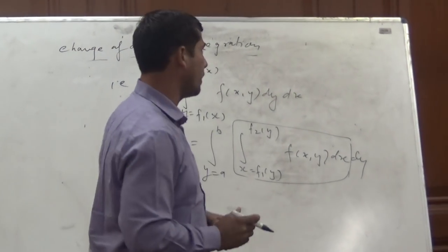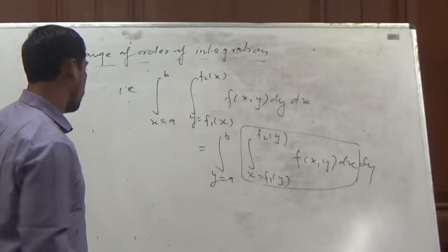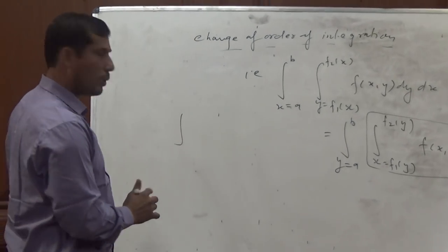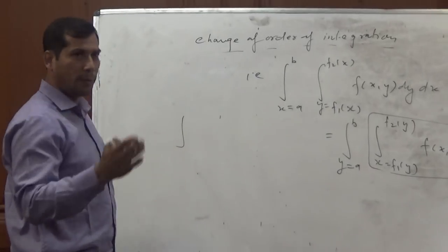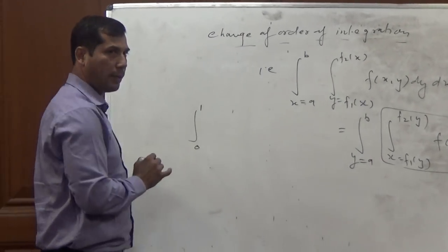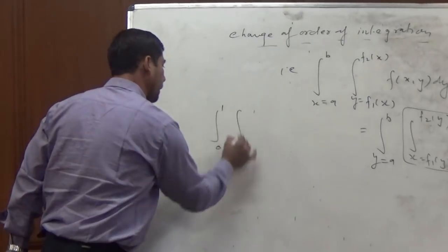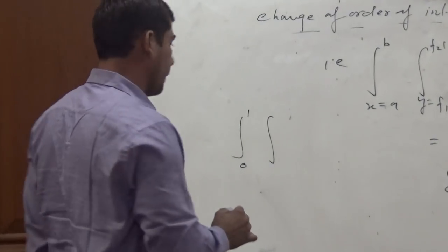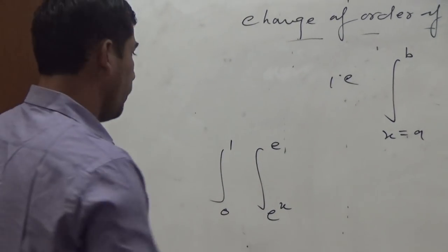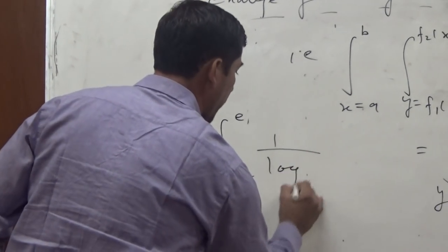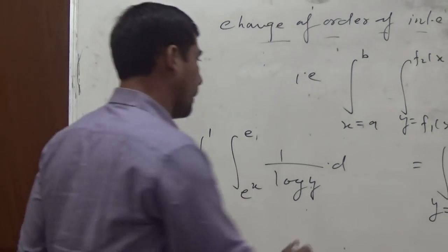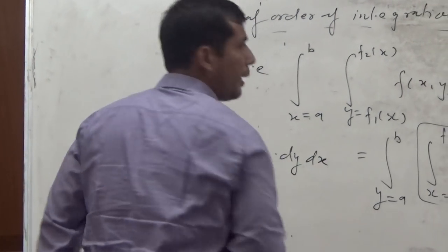For example, consider the double integral where the first integration limit is constant: 0 to 1 for x, and the second integration is for y from e^x to e, with the function 1 / log(y). Since this inner integration is for y, we write dy first, then dx.